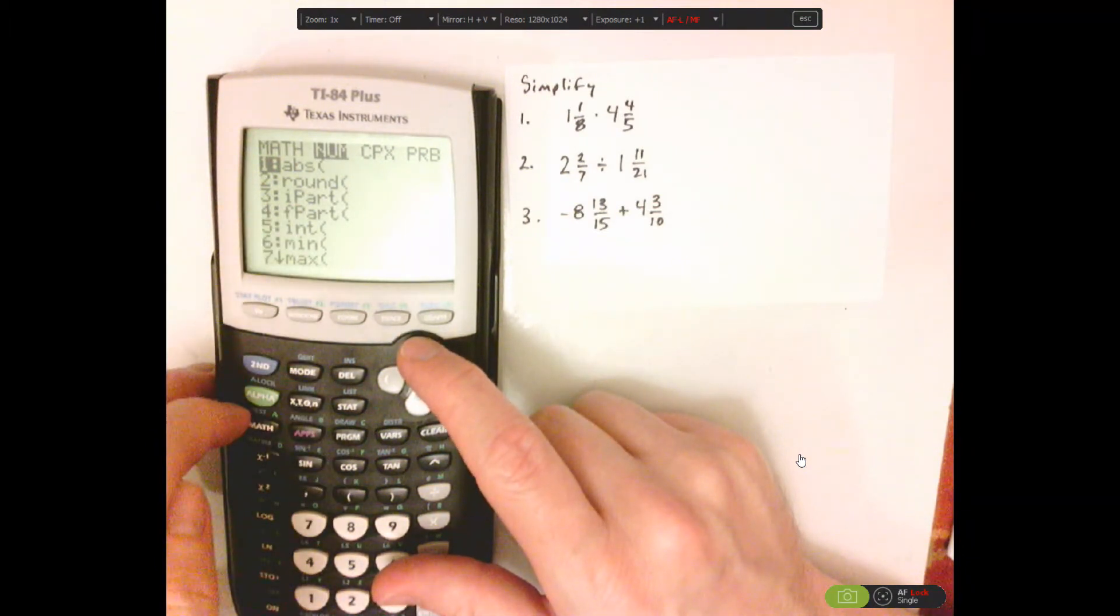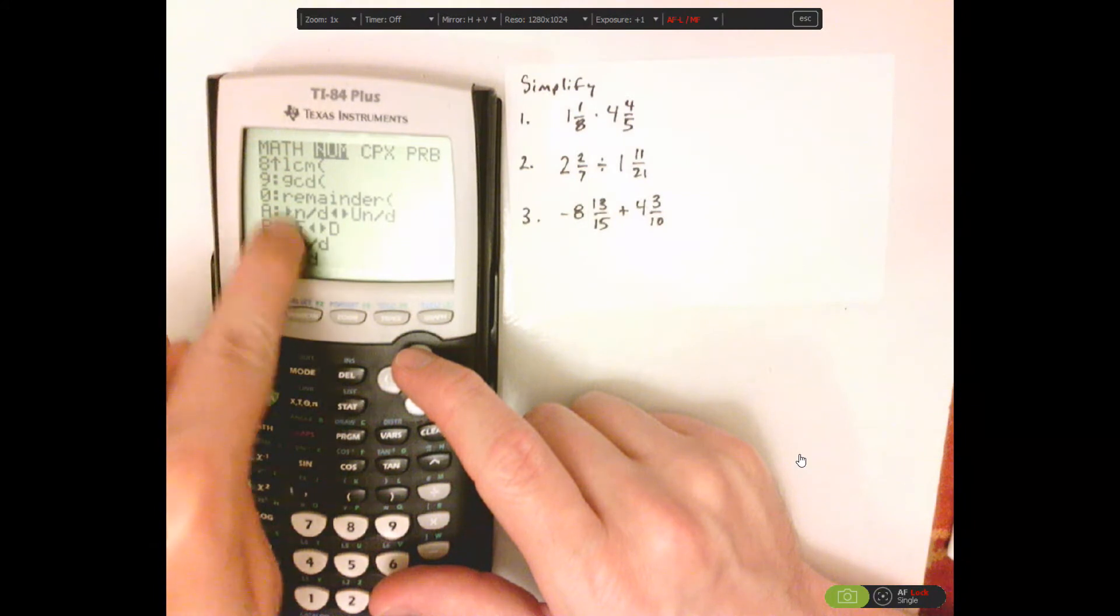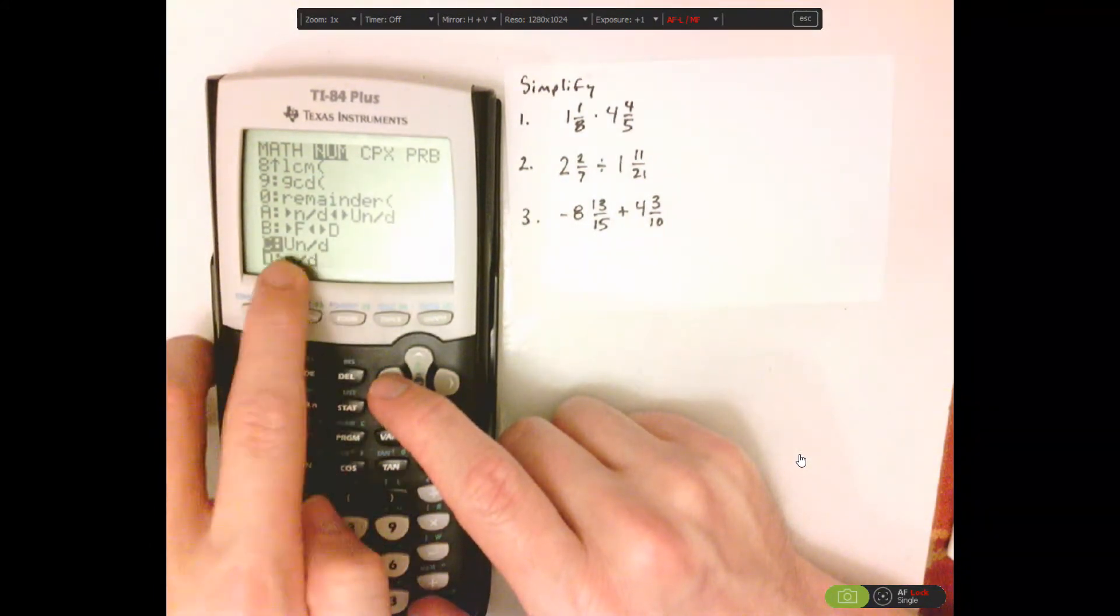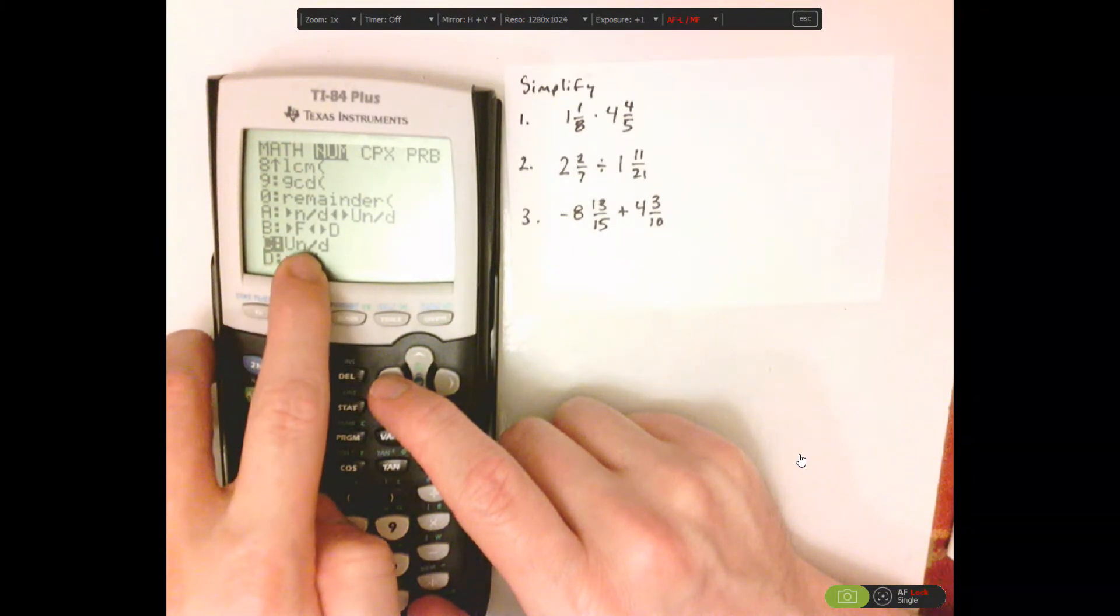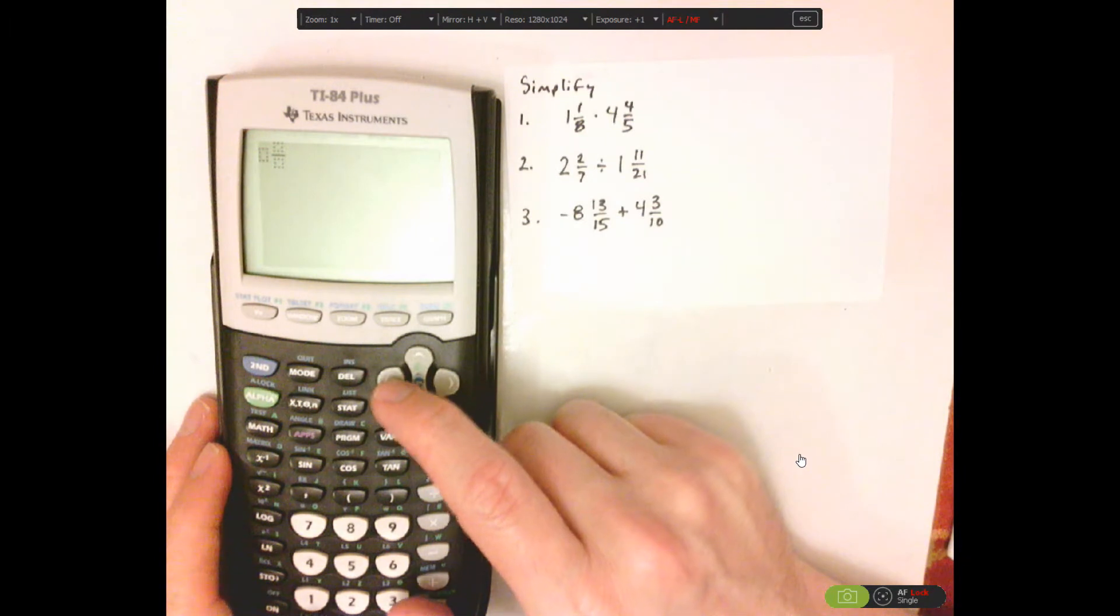Now, it's all the way at the bottom, so I'm going to push up, and that takes me all the way down here. And I want that mixed number, so units, and then n for numerator and denominator. So select that.